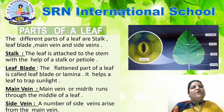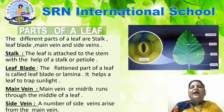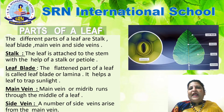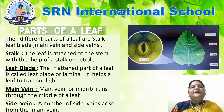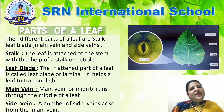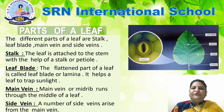A leaf consists of different parts. Number 1 is stalk. The leaf is attached to the stem with the help of a stalk or petiole. Second is lamina or leaf blade. The flat, broad, green part of the leaf is called lamina or leaf blade. It helps the leaf to trap the sunlight. Third is midrib or main vein — a thick and the longest vein present in the middle of the leaf; it is absent in grass. Next is side vein. A number of side veins arise from the main vein. These veins help to transport water, minerals and prepared food to and from the leaf.